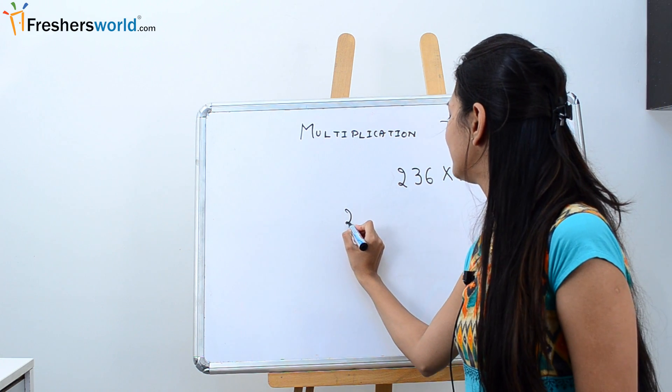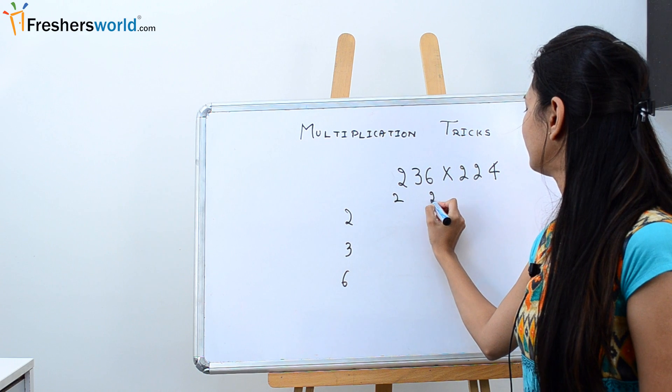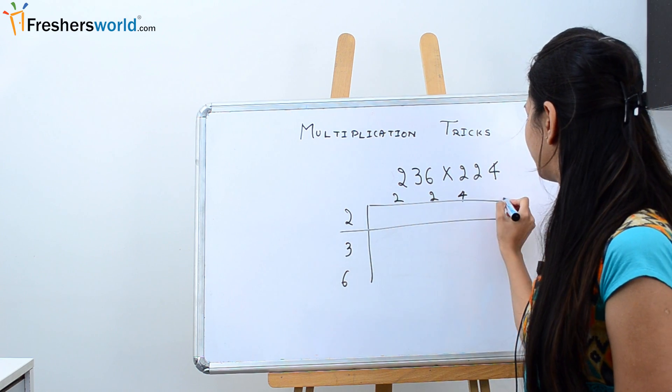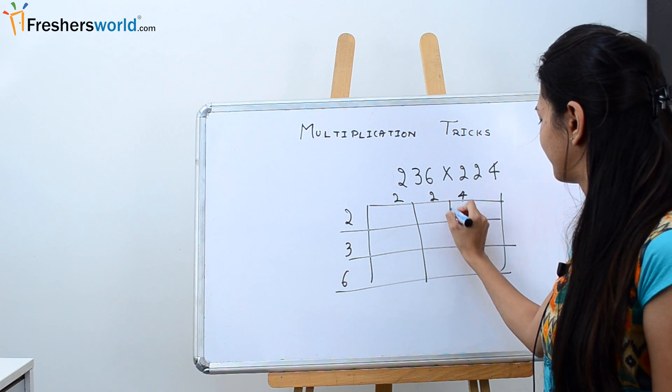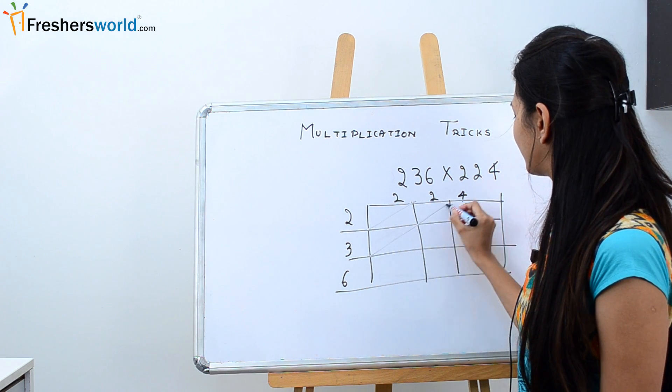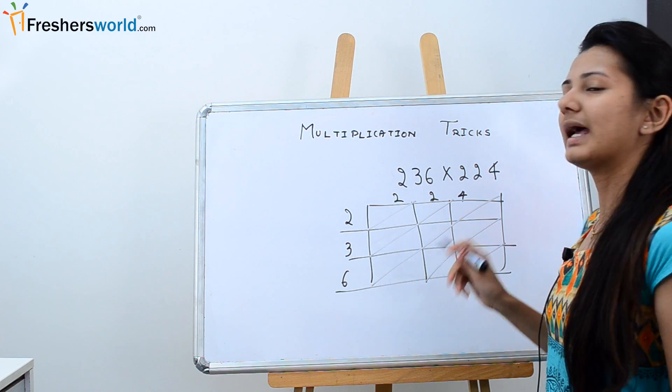Now I'll write the two numbers in the horizontal and the vertical way, and then put a box. Now I'm going to divide these boxes into equal halves like this, and then start multiplying.